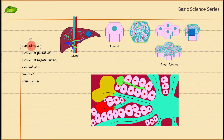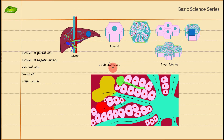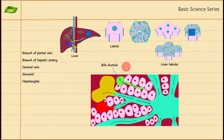I'll start with the bile ductile. Bile ductile is composed of two words: bile and ductile. Bile is the important component that helps in fat degradation, as already mentioned. The bile ductile is shown in green color here. Hepatocytes produce bile, and bile goes inside the bile ductile. A ductile is basically a smaller duct—a smaller tube. Just as you go from lobes to lobules, the terminology changes at the cellular level: bile duct becomes bile ductile.